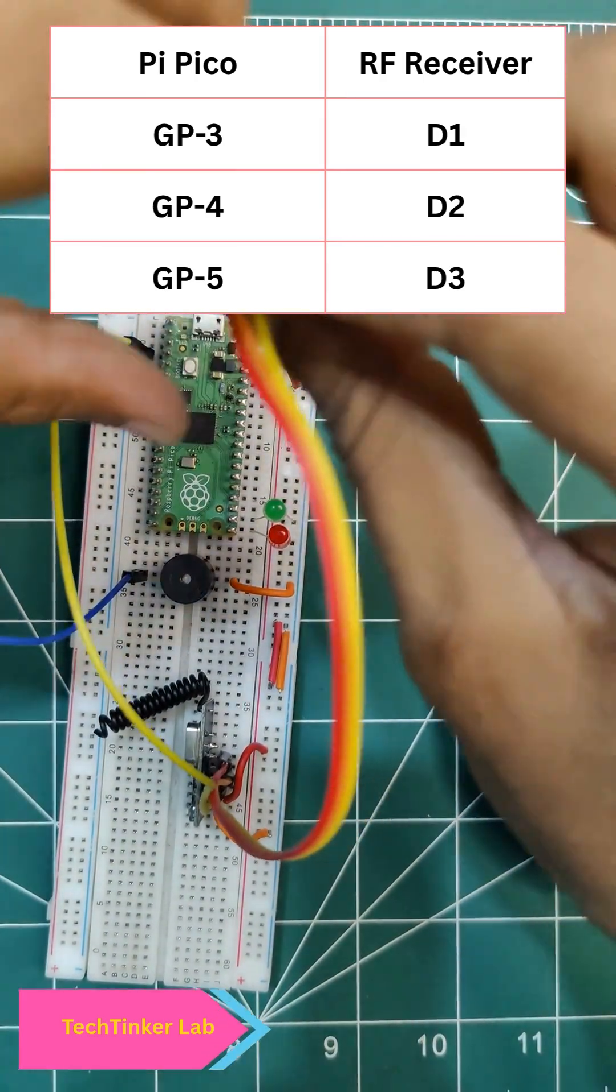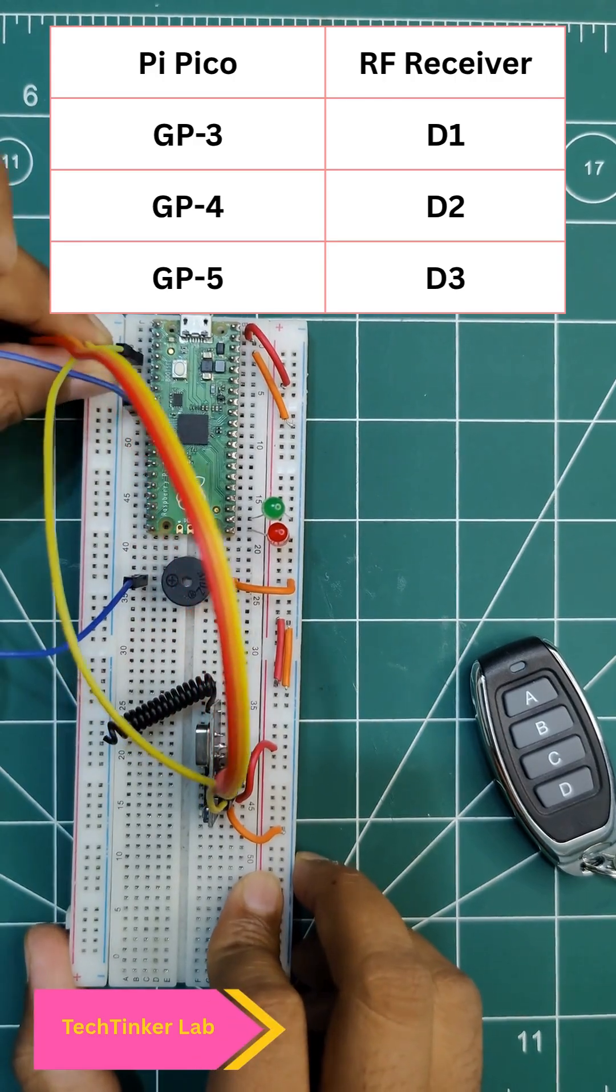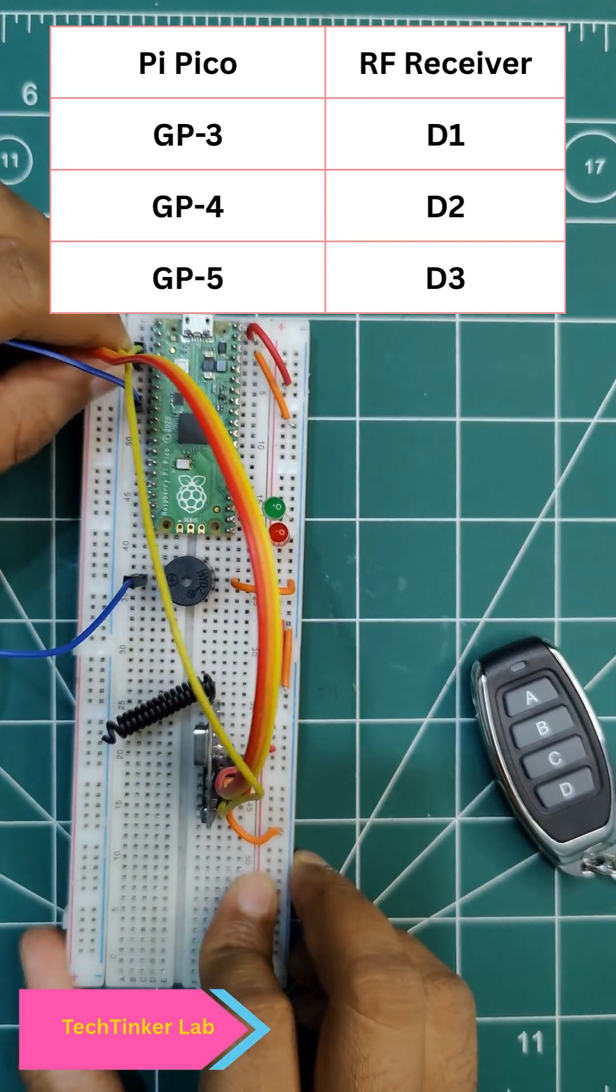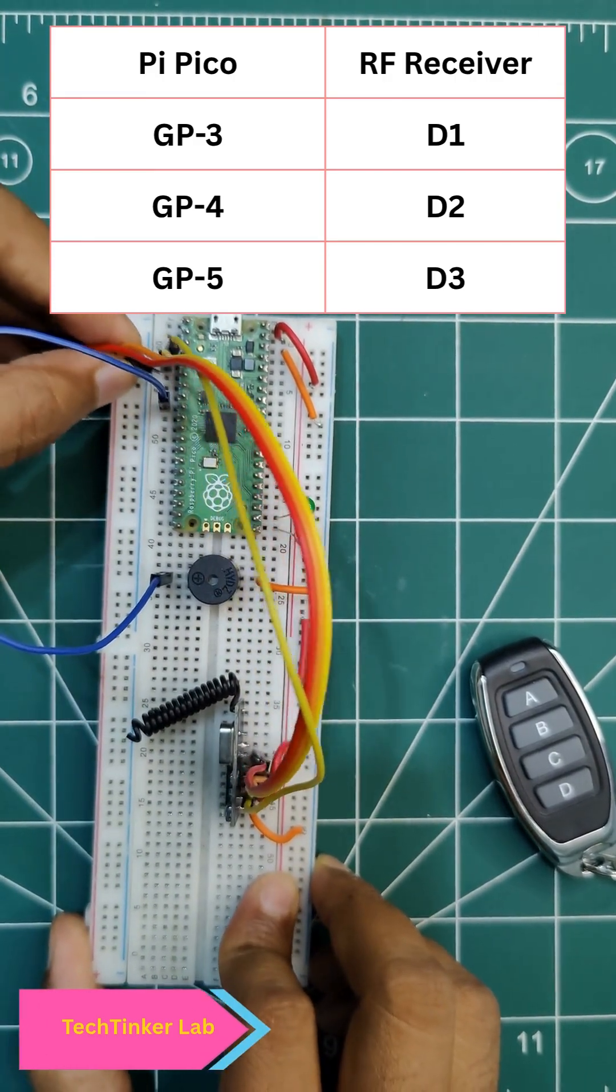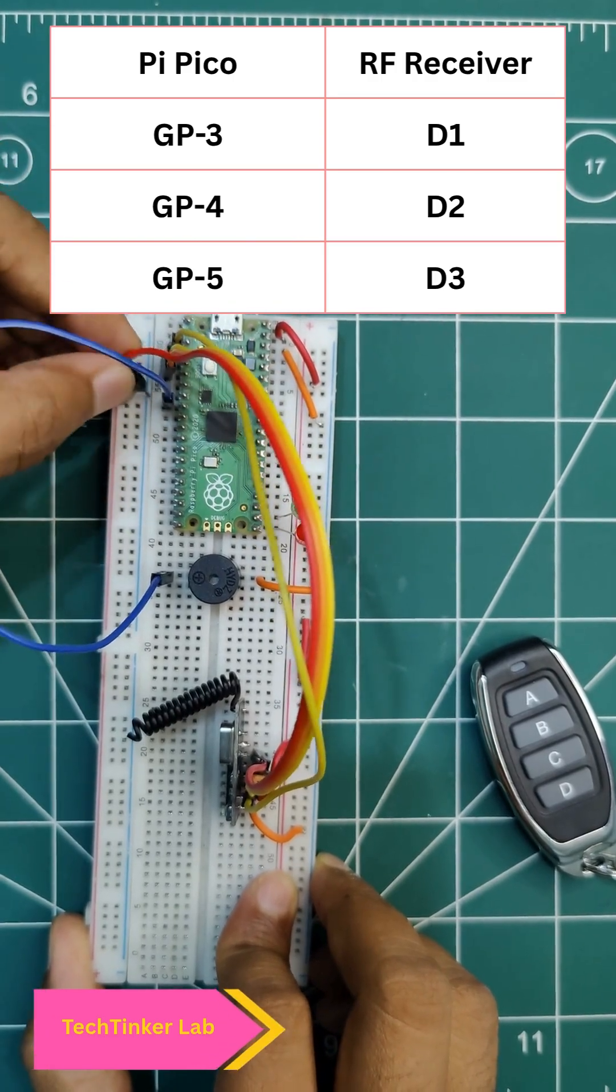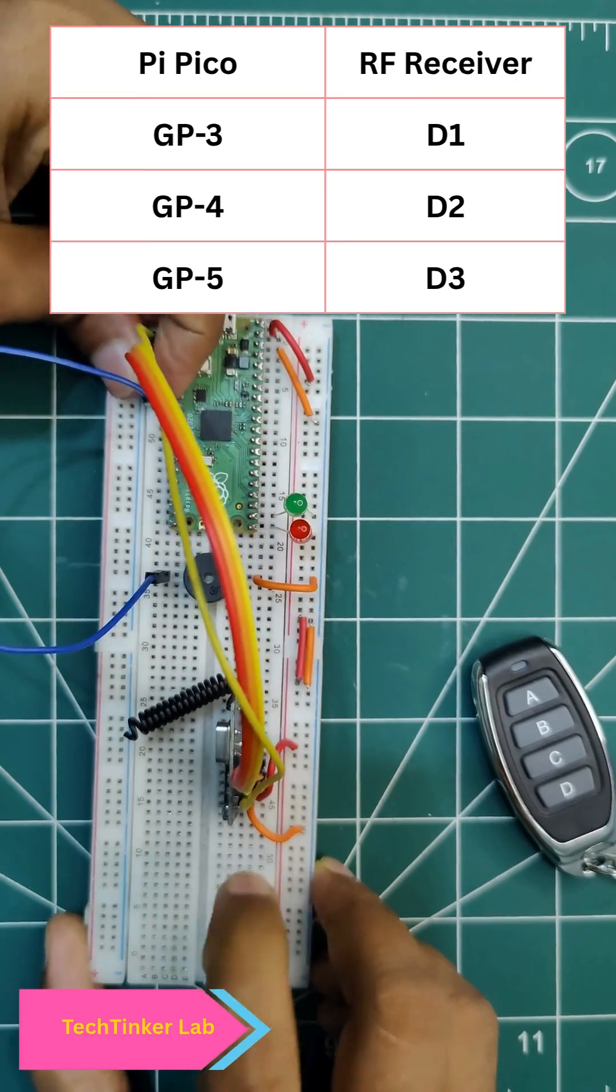So again the yellow one is D1, so I will be connecting it to GP3. Then the orange one which goes to GP4. And the last one is GP5. So the RF connection is there.